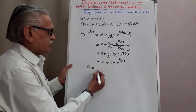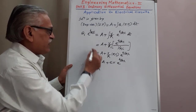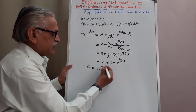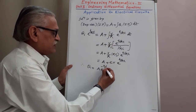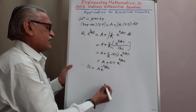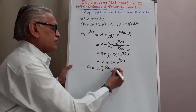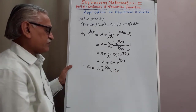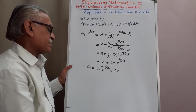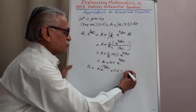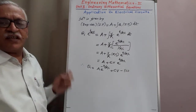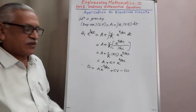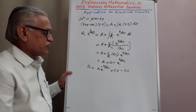Transferring e raised to T/RC to the other side (to the numerator as e raised to minus T/RC), Q equals A times e raised to minus T/RC plus CV. We call this Equation 2 — the expression for charge Q with arbitrary constant A.